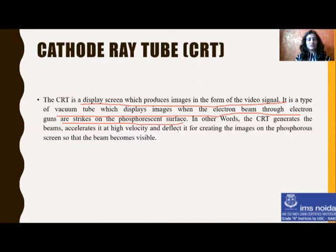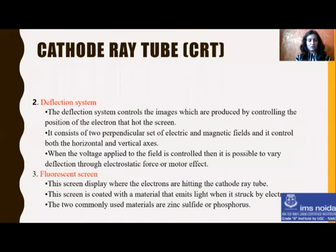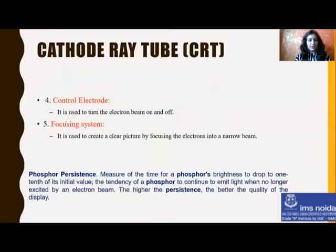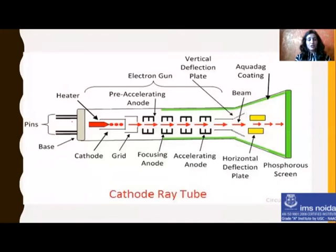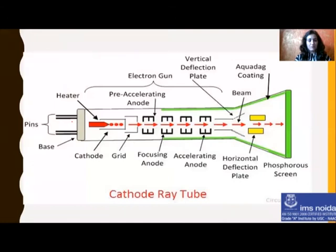CRT is a tube which consists of various components, like an electron gun, cathode and anode, positive and negative charge elements, a coating on the screen, and the picture is displayed. The components of the CRT include the electron gun, deflection system, fluorescent screen, control electrodes, and focusing system. We will discuss each and every topic in detail with the help of this diagram.